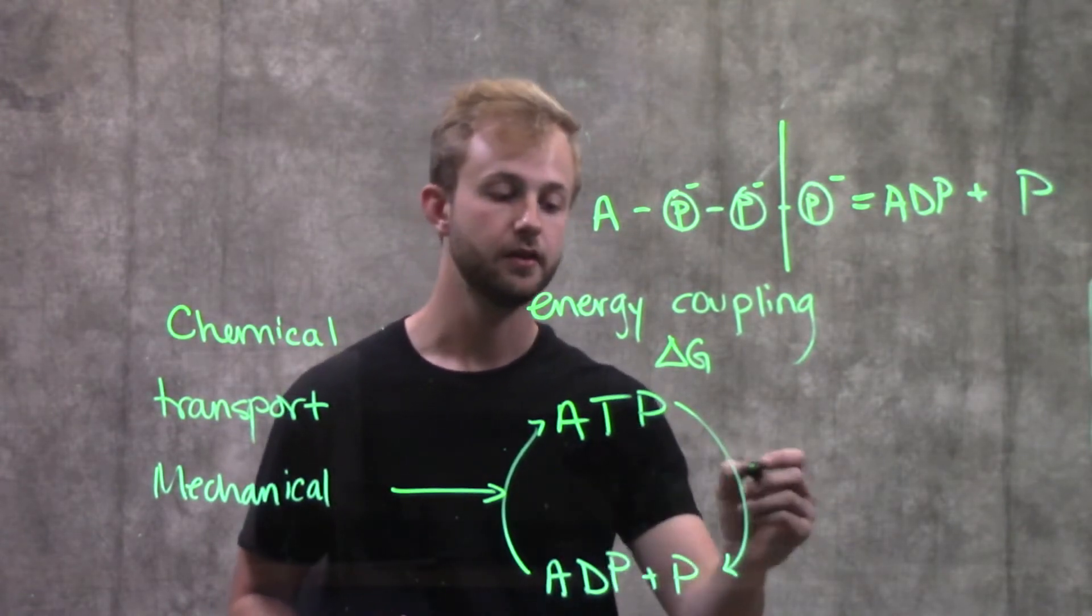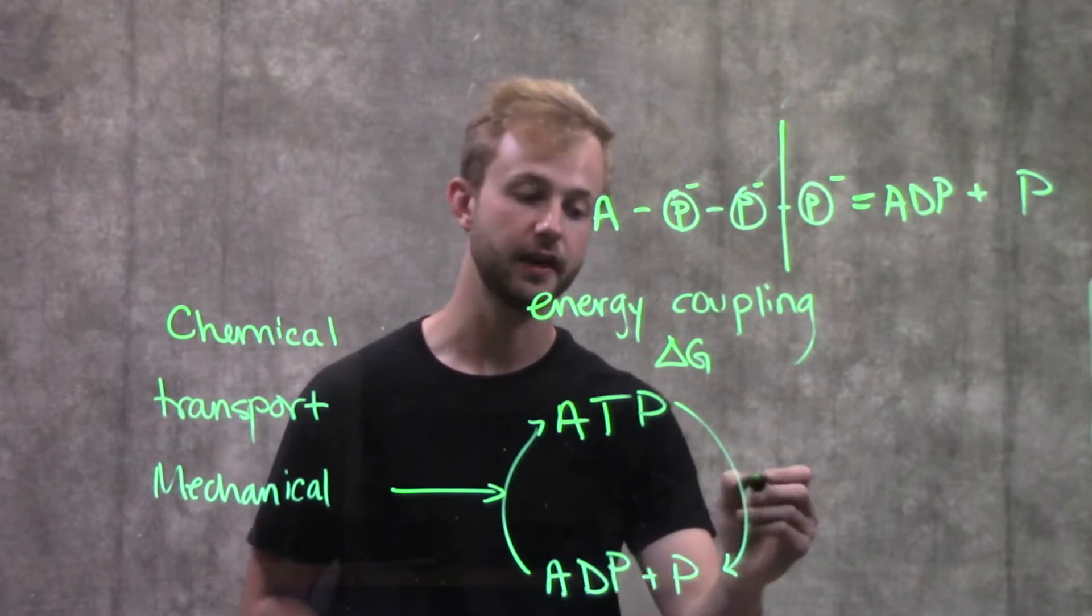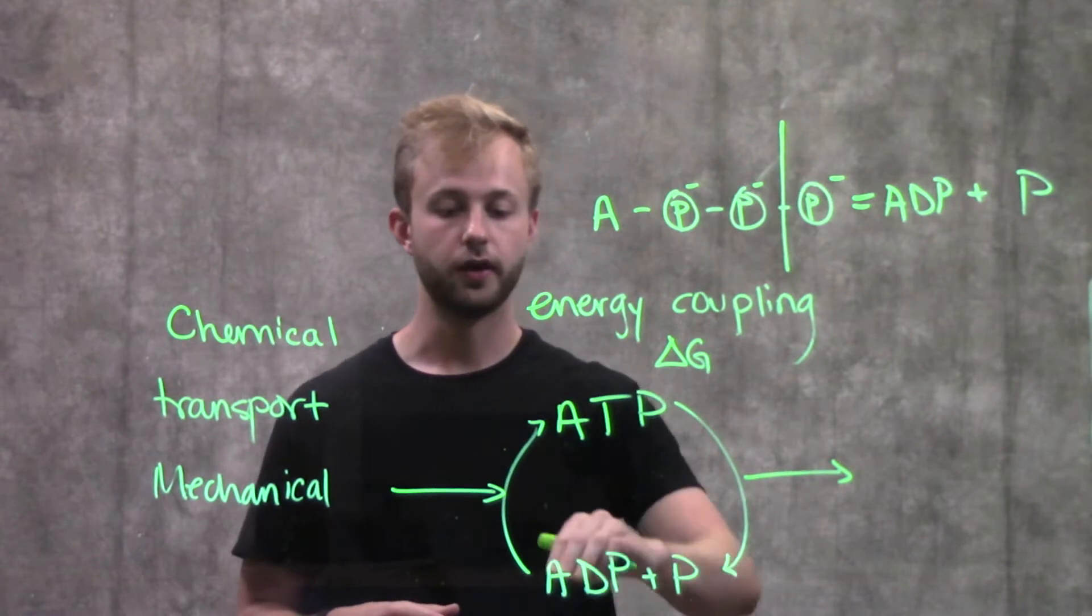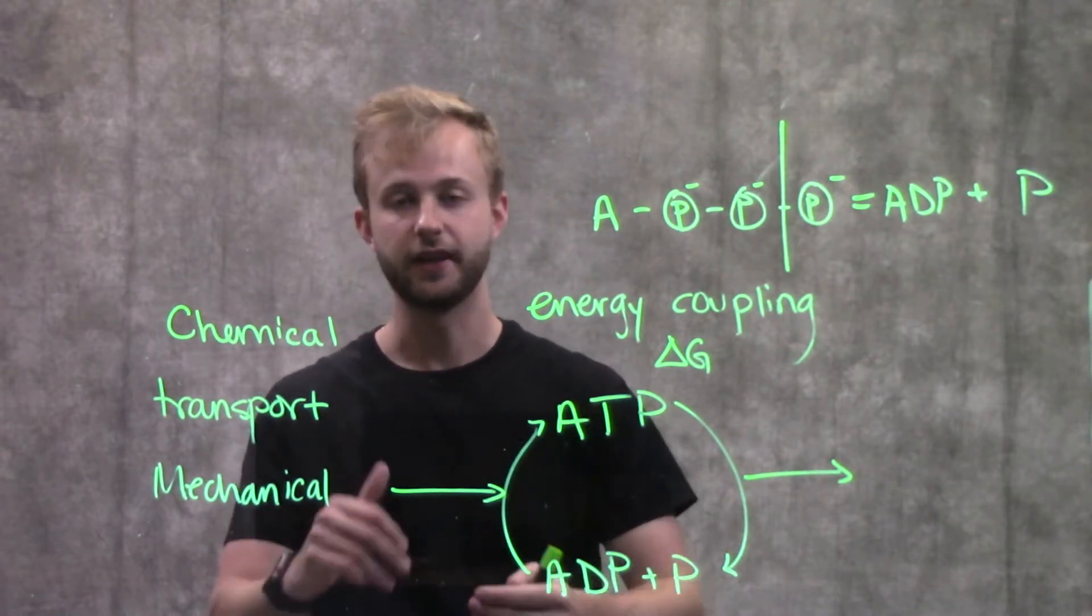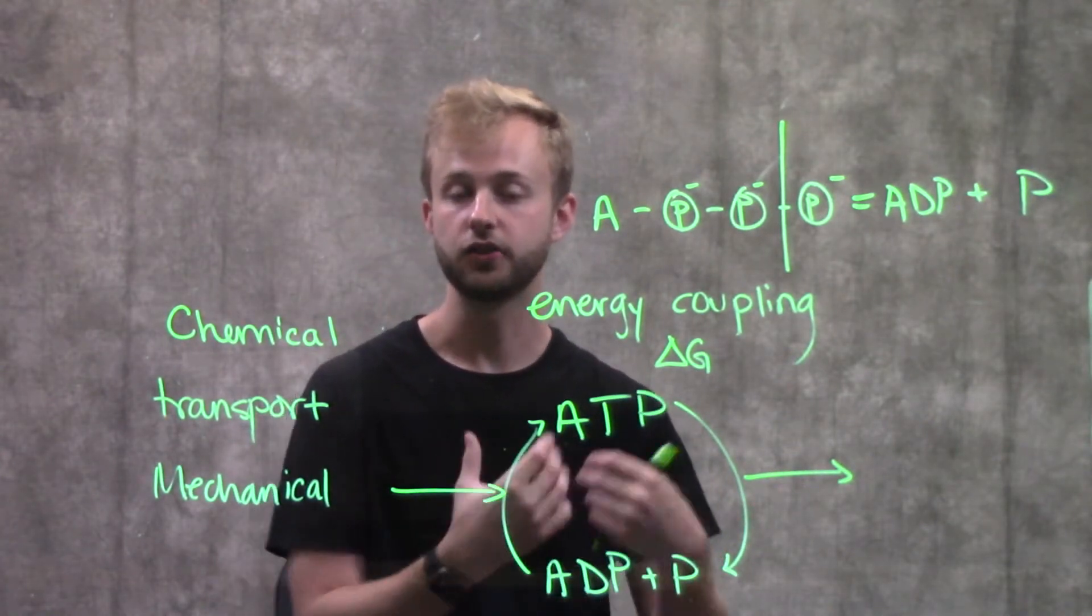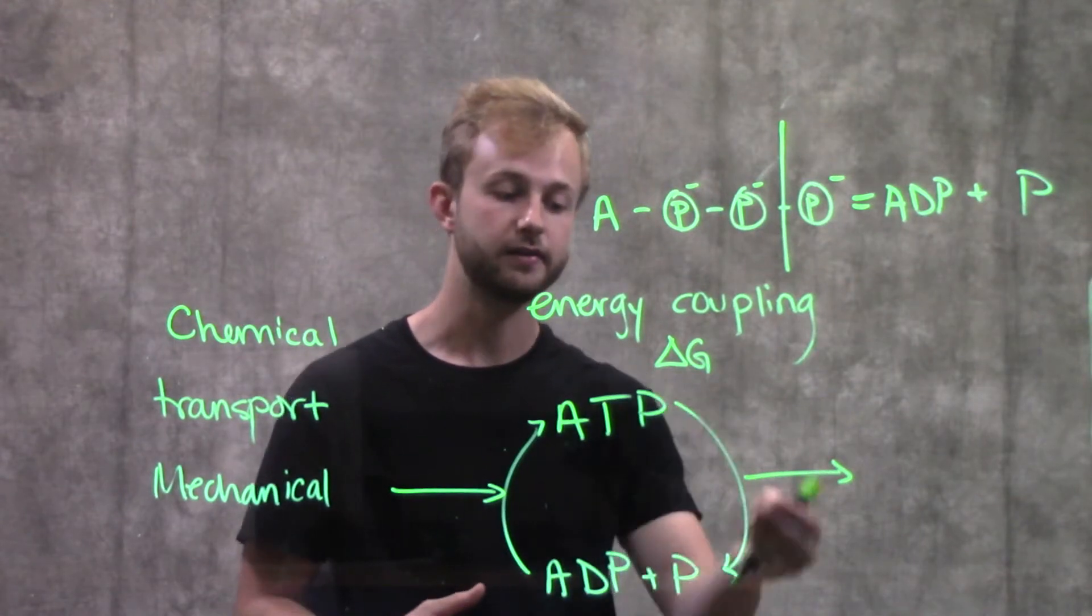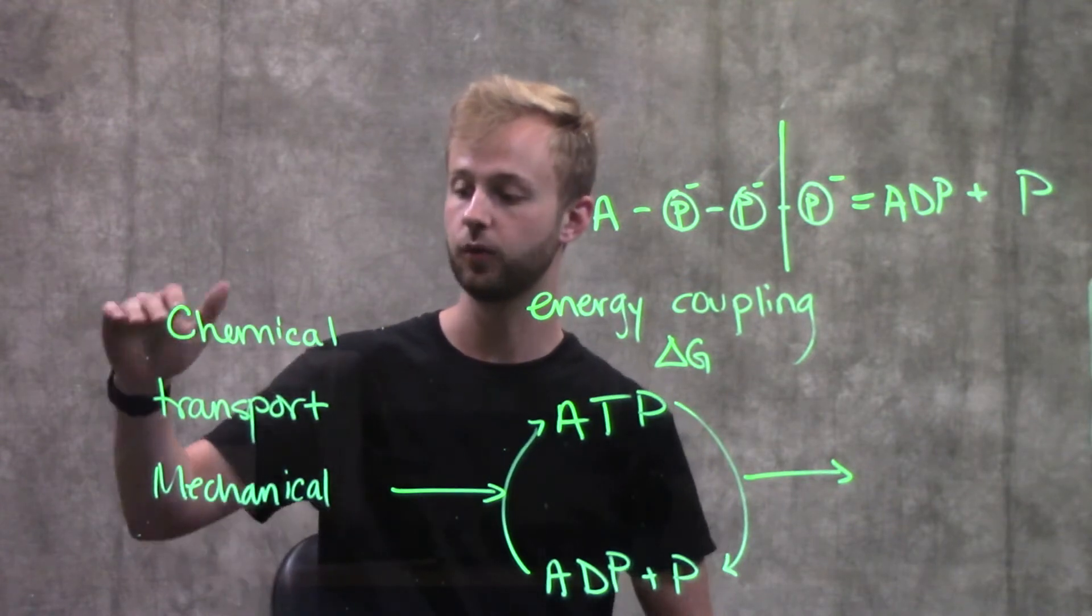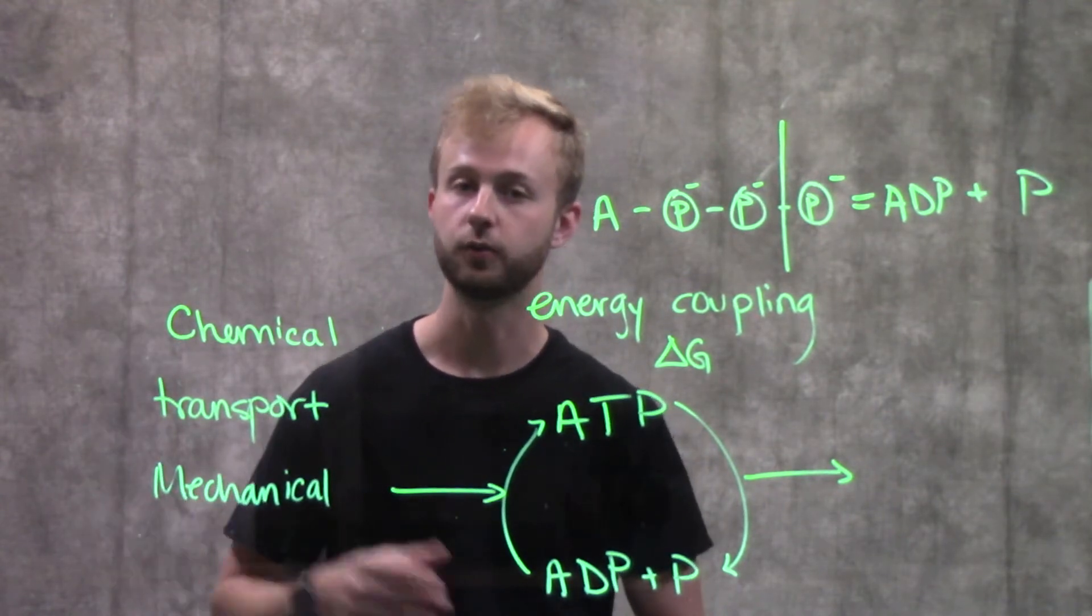Then from ATP, when we hydrolyze it to ADP and the phosphate, we're going to be releasing energy. So just to review, on this side, we have to add energy to get ADP to go back to ATP. And then when it's hydrolyzed, we release energy that we can then use to power other processes like chemical work, transport work, or mechanical work.